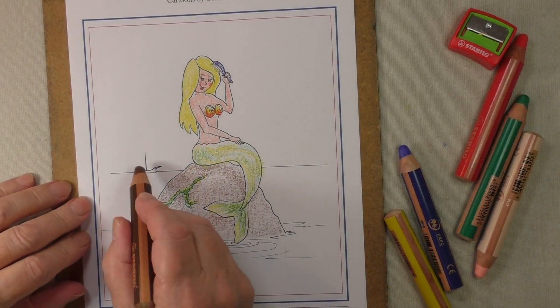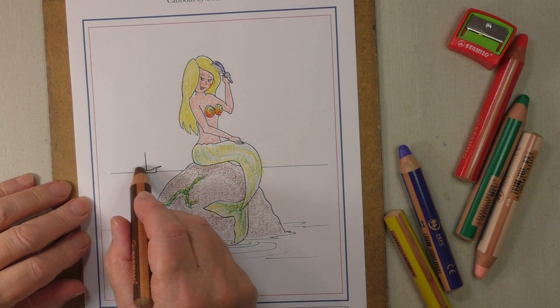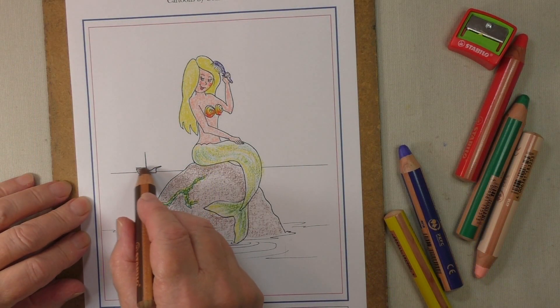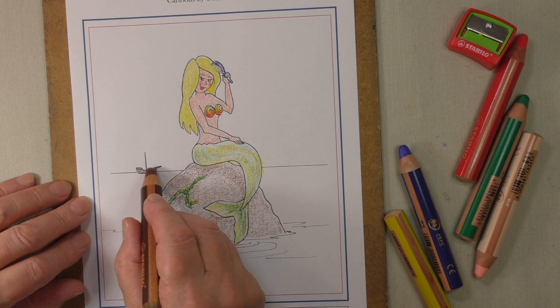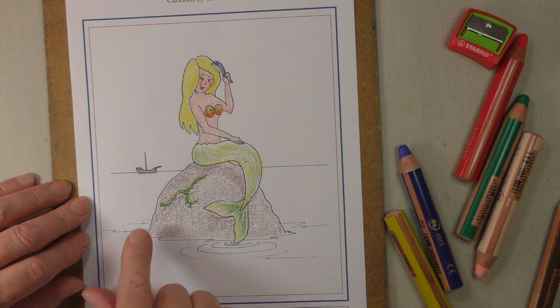Now, I make the boat brown. Very light brown. You're only going to be able to get a little bit of this in. And there we are. Now, what do we do about the water?